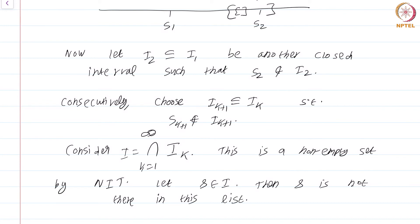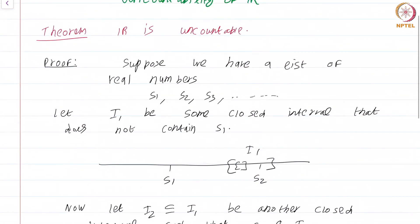What we have done is we have started out with the list S1, S2, S3 of real numbers and I have shown that there is some element that is not there in this list, but is a real number.